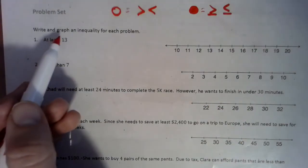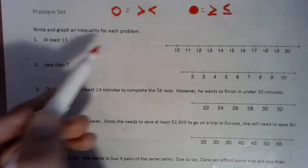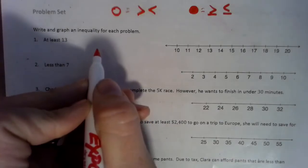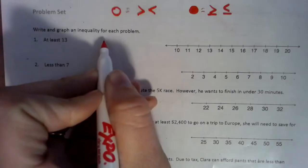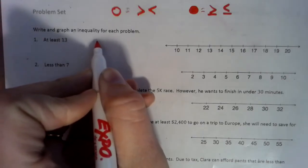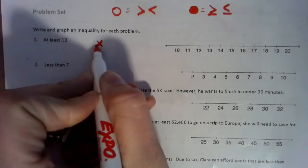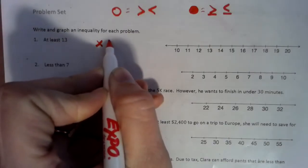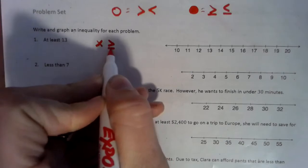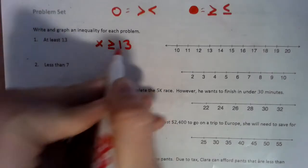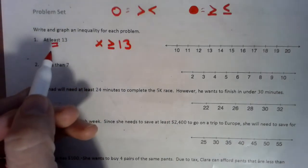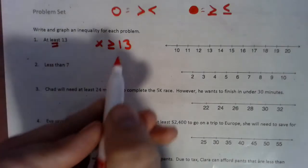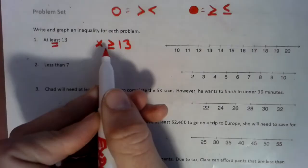So we're going to write and graph an inequality for each of the problems, at least 13. So at least 13 means it can be 13 or bigger. So we're going to use the variable x. So that means x has to be at least, so that means greater than or equal to 13. It can be 13, but it has to be no smaller than that. So that's our writing of it.